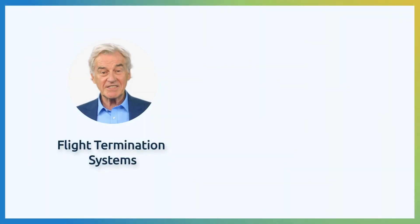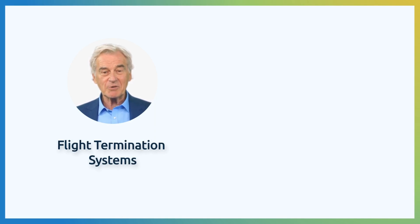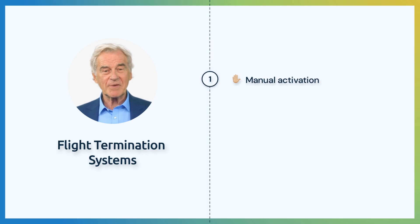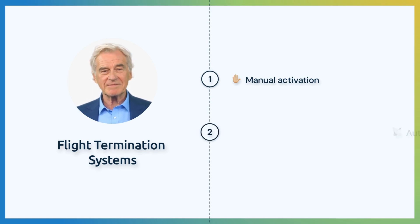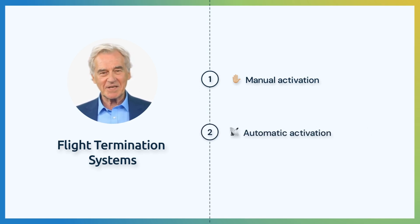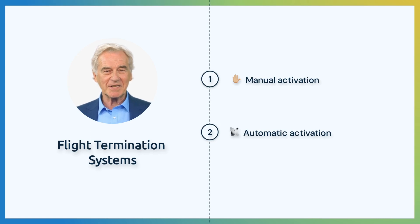As for the activation system of the FTS, the same concept of segregation must be fulfilled, with two possible options. Manual activation: the communication system used for its activation must be independent of the aircraft communication system. Automatic activation: for example, if it is activated by geographical position or by the attitude of the aircraft, the FTS must be equipped with an independent GNSS system or an inertial measurement unit.